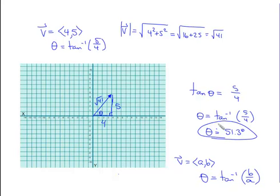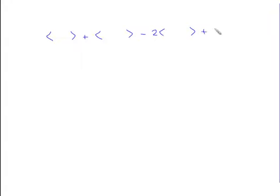That's the lesson for today. One final note: when combining vectors with addition, subtraction, and scalar multiplication, you combine all the x components and all the y components separately according to the operations involved. It works exactly the way you'd expect — nice, easy, and clean.